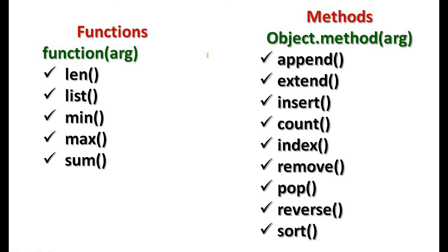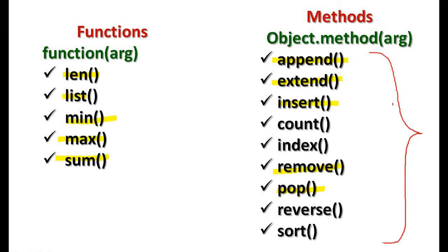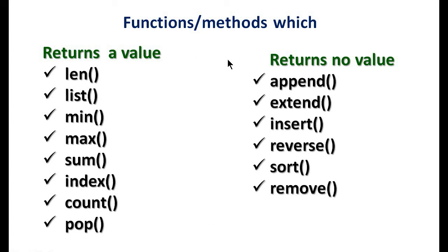In some functions you use list name dot function name — like L.append(), L.extend(), L.insert(), L.remove(), L.pop(), etc. And in some functions you use them like len(L), min(L), sum(L). All of these are functions, but those used as object_name.function_name are usually called methods. Why this is so is beyond your syllabus and we will not discuss it now.